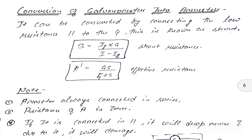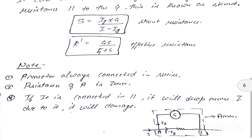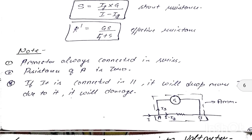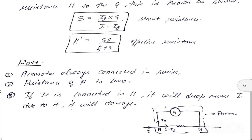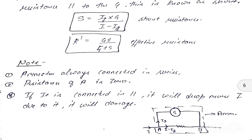The effective resistance after connecting the shunt is: R' = GS / (G + S). Important notes: an ammeter is always connected in series; its ideal resistance is zero. If connected in parallel, it draws more current and gets damaged.